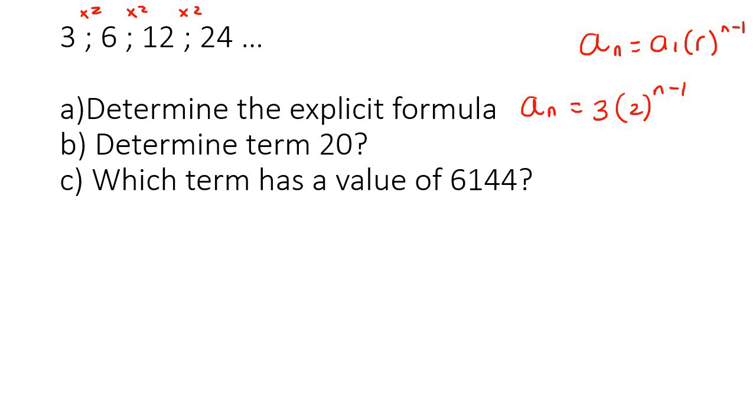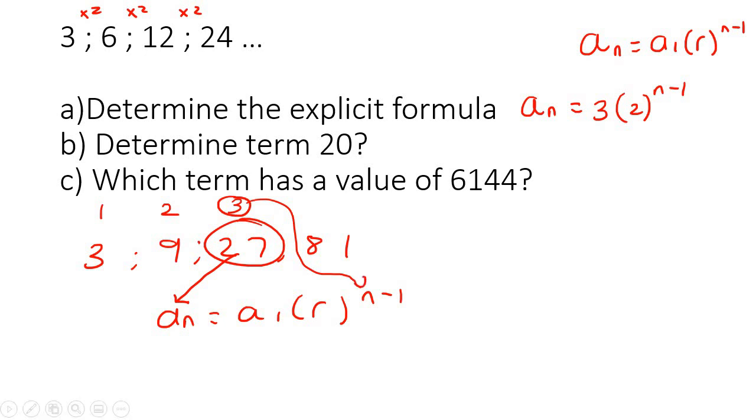So question B says, determine term 20. So you've got to know if the 20 goes there, or if the 20 goes there. So remember that if I give you something like 3, 9, 27, 81, then if I use this formula, if I use the 27, then the 27 goes there. But what position is that? That is term 1, 2, 3. So the 3 goes there. So they're not saying that the value is 20. They're saying that it's term 20. So this 20 is going to be the N.